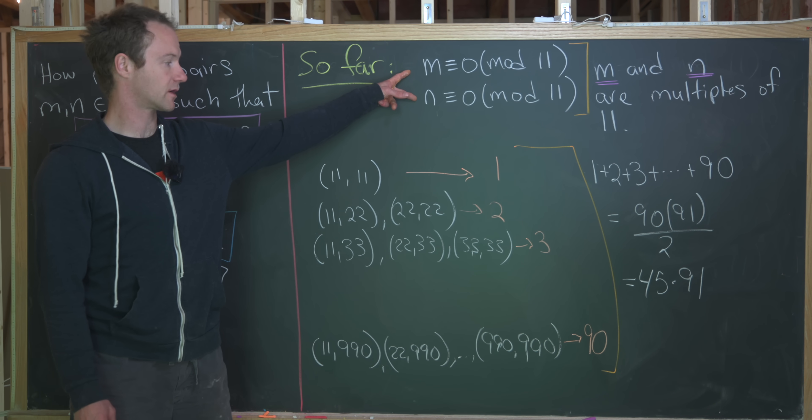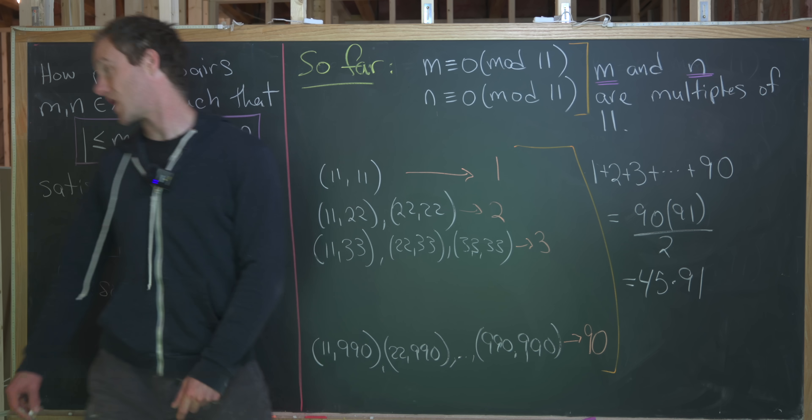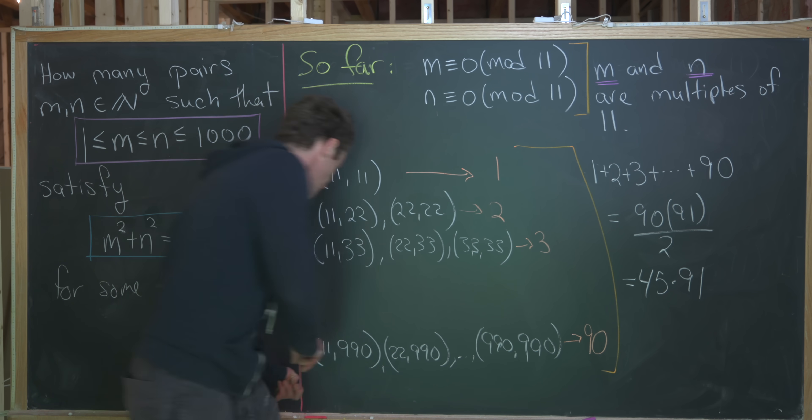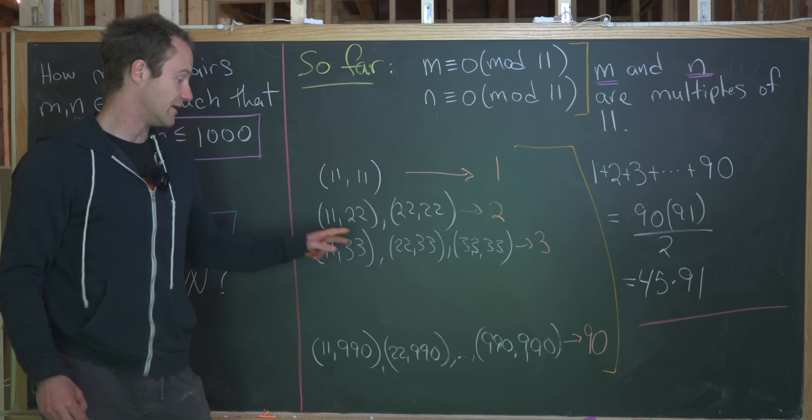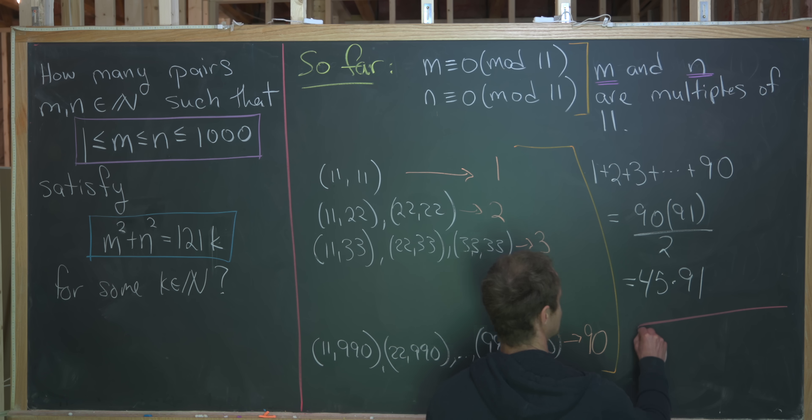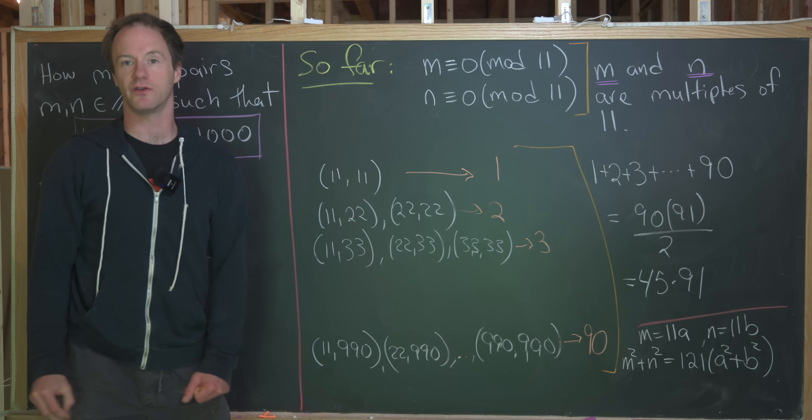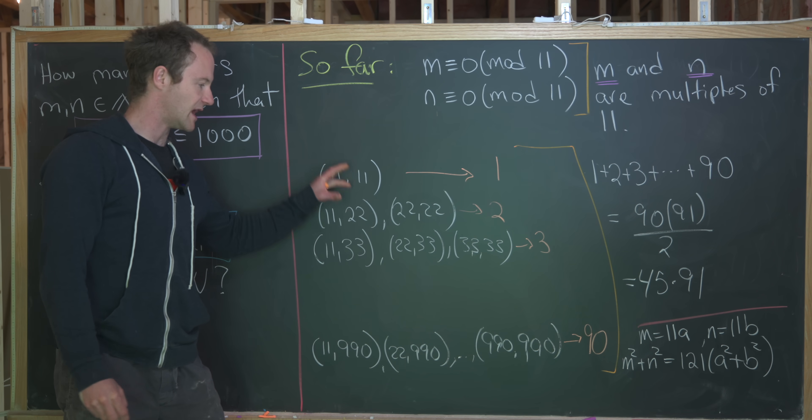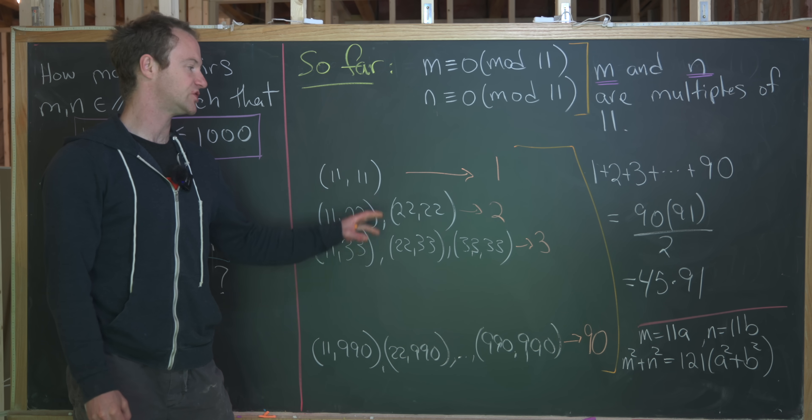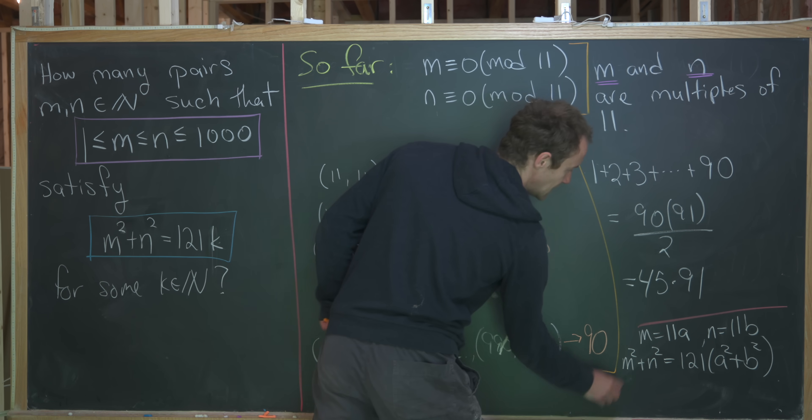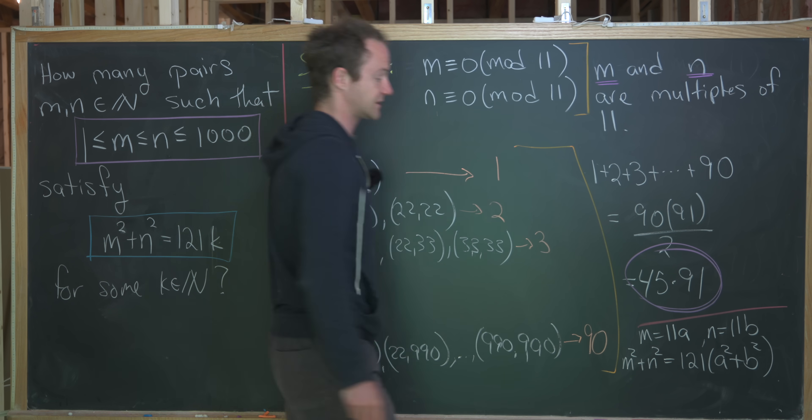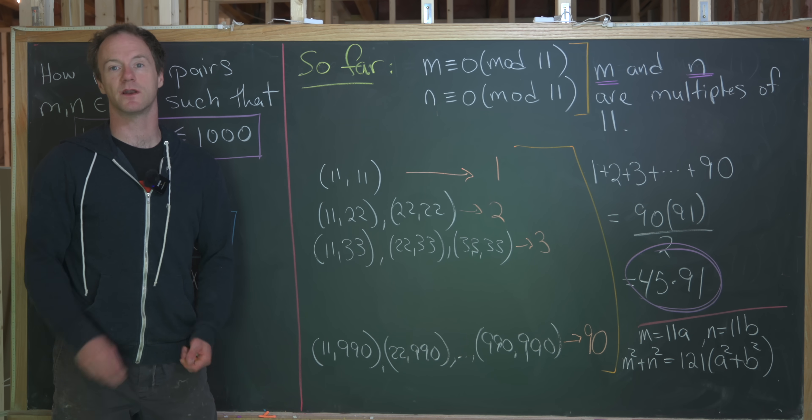Now we just have to check that all of those possibilities satisfy this second condition. But because of the way we arrived here, we see that all of these ordered pairs automatically satisfy this second condition. So we could check that really quick if we wanted to. Notice if m and n comes from this list, then that means that m equals 11 times a and n is equal to 11 times b. But that makes m squared plus n squared equal to 121 times a squared plus b squared. But that's most definitely a multiple of 121. So just to reiterate, we made this list of potential candidates for solutions, and we showed that they were all solutions, meaning that the total number of solutions is this number 45 times 91. And that's a good place to stop.